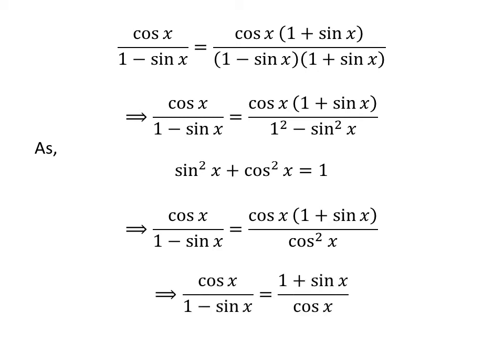Cancelling out the common factor cosine of x in the numerator and the denominator of the right hand side gives us cosine of x upon 1 minus sine of x is equal to 1 plus sine of x upon cosine of x. Thus, the equation has been proved.